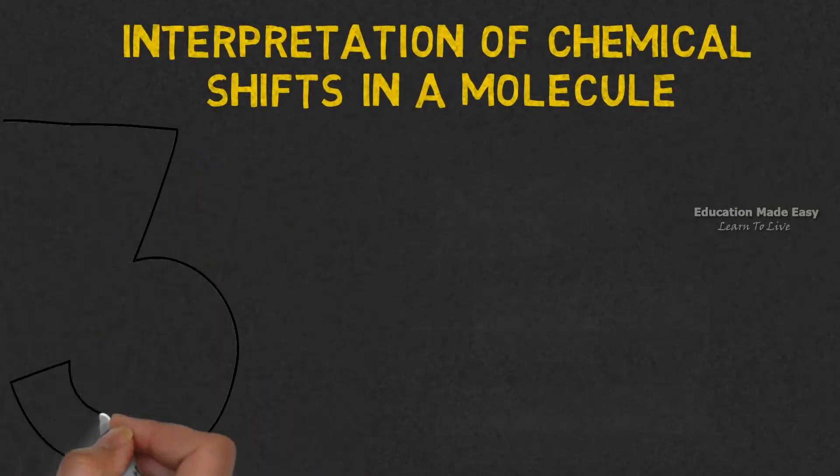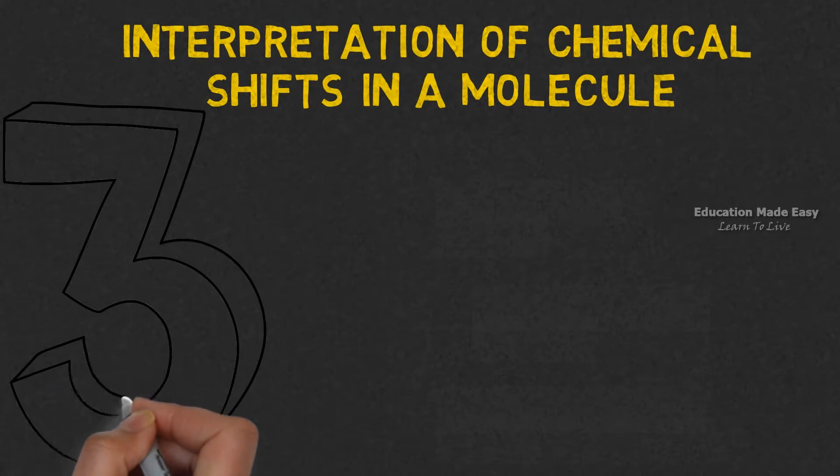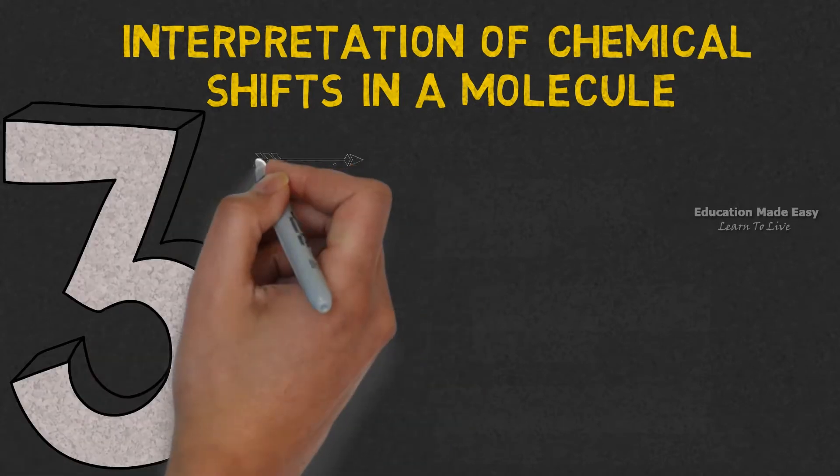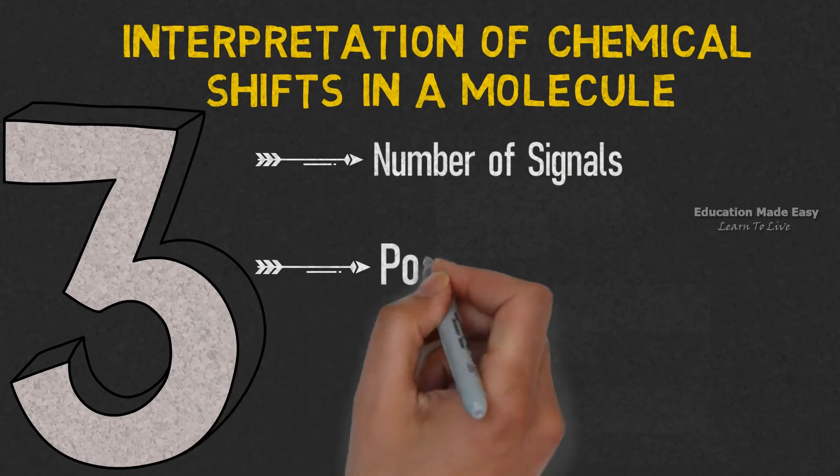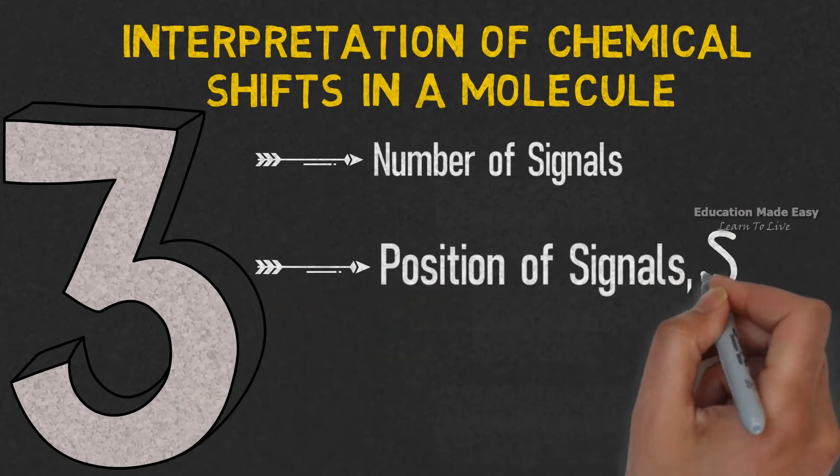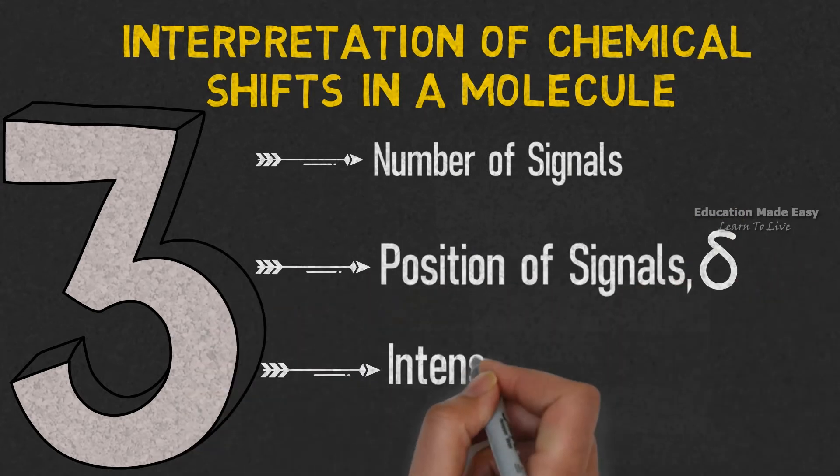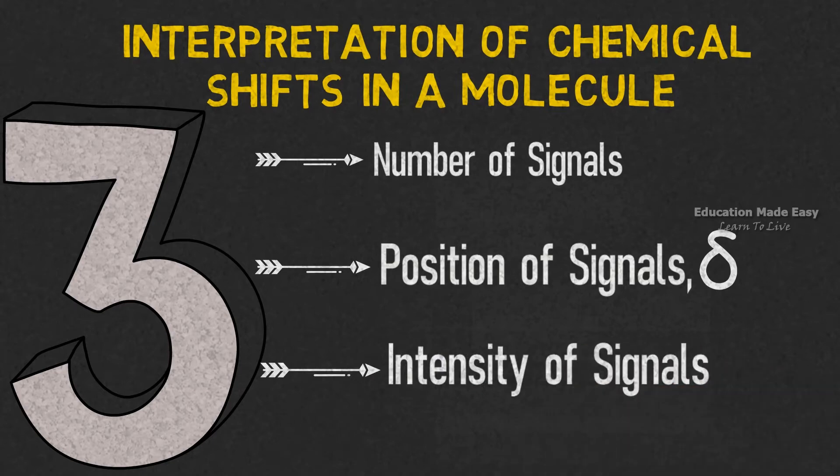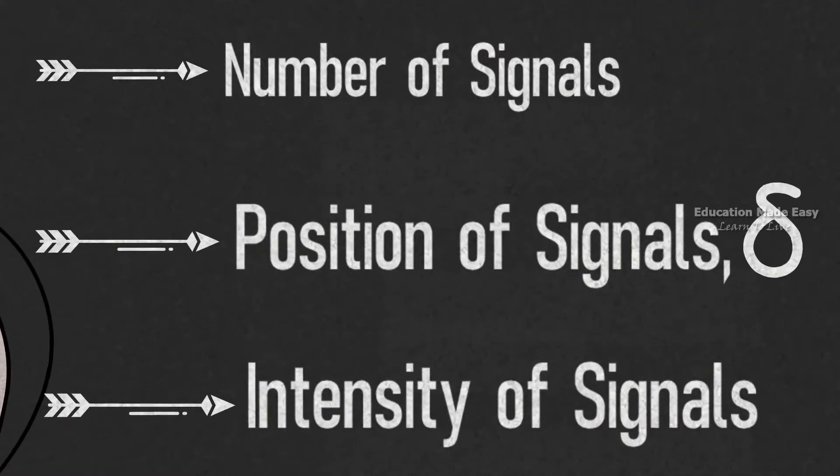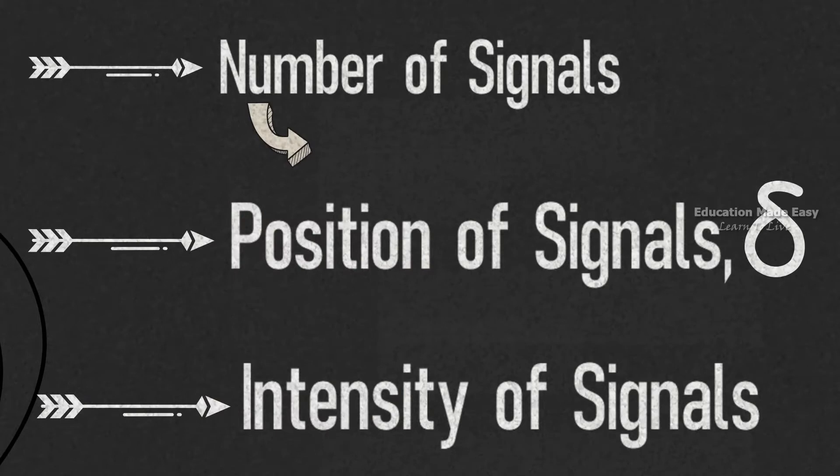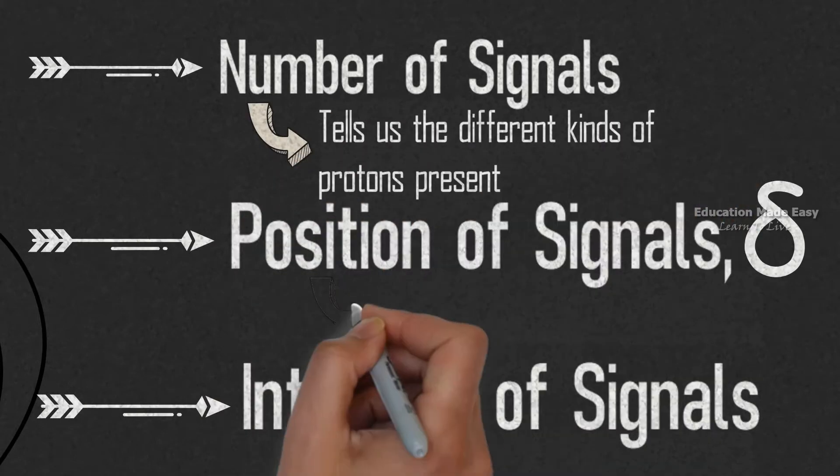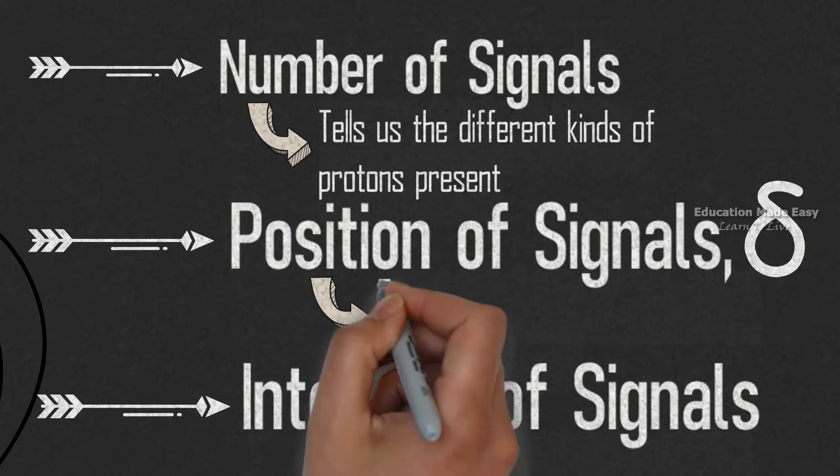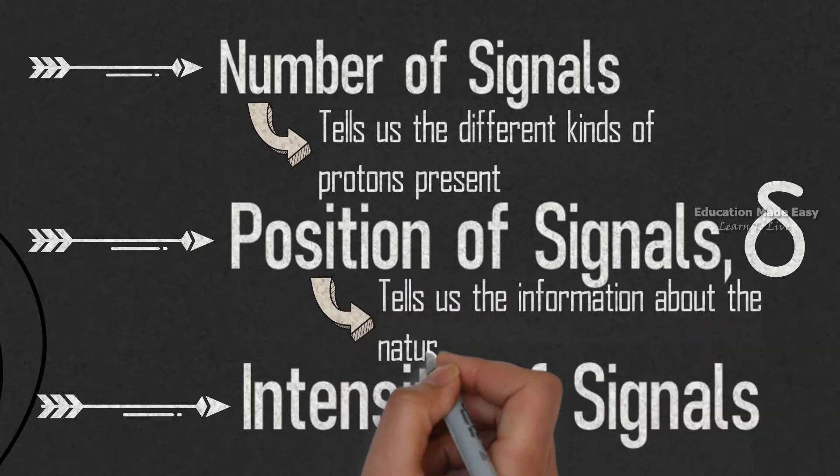We will be getting three important information from the value of chemical shift. The first one is number of signals. The second one is position of signals. Thirdly, intensity of signals. The number of signals tells us the different kinds of protons present. Position of signals tells us the information about the nature of protons.